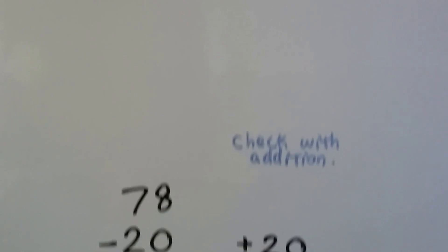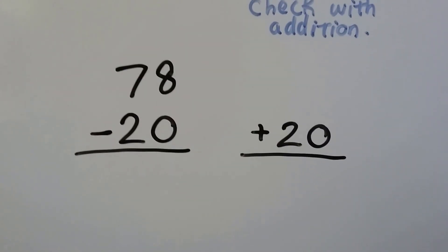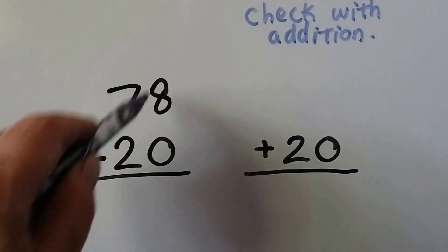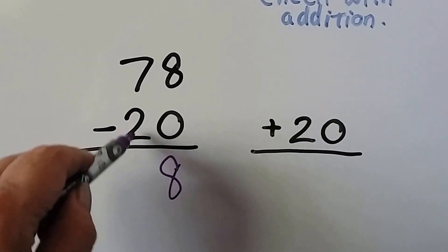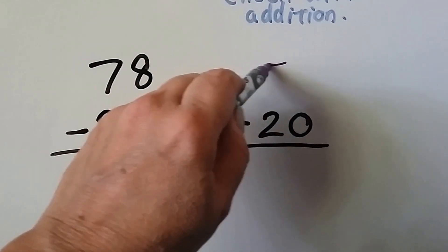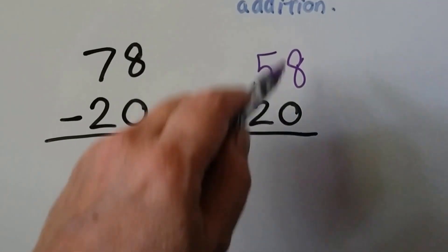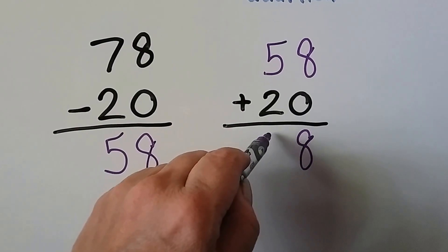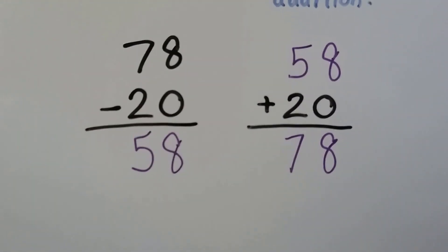Let's try it again. We've got 78 minus 20. Do we need to regroup? No. 8 take away none is 8; 7 take away 2 is 5. We put the 58 up here as an addend and add them. 8 plus 0 is 8, and 5 plus 2 is 7. We get the same thing as the minuend, and we know we did it correctly.